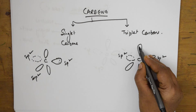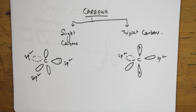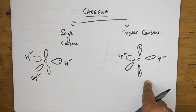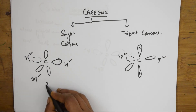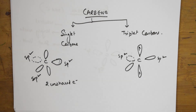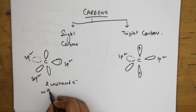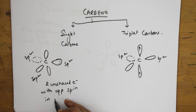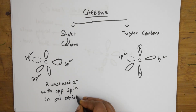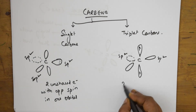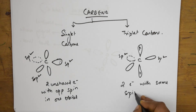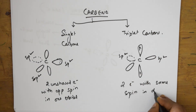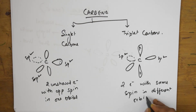In singlet carbene, there is a pair of electrons with opposite spin present in one orbital. In triplet carbene, there are two electrons with the same spin present in two different orbitals. So singlet carbene has two unshared electrons with opposite spin in one orbital, while triplet carbene has two electrons with same spin in two different orbitals.